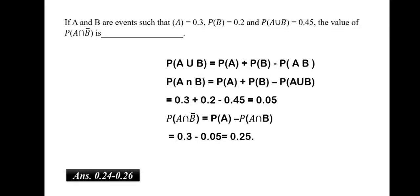If A and B are events such that P of A is equal to 0.3, P of B is equal to 0.2, P of A union B is equal to 0.45, the value of P of A intersection B dash is. We can see that from formula we know P of A union B is equal to P of A plus P of B minus P of A intersection B. From here, we derive that the P of A intersection B will be equal to 0.05. But in this question, they have asked us P of A intersection B complement. Thus, we would do P of A minus P of A intersection B to obtain P of A intersection B complement. Thus, we would get the answer about 0.25.